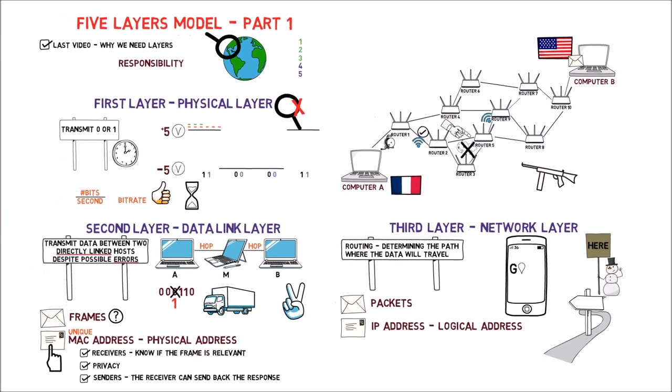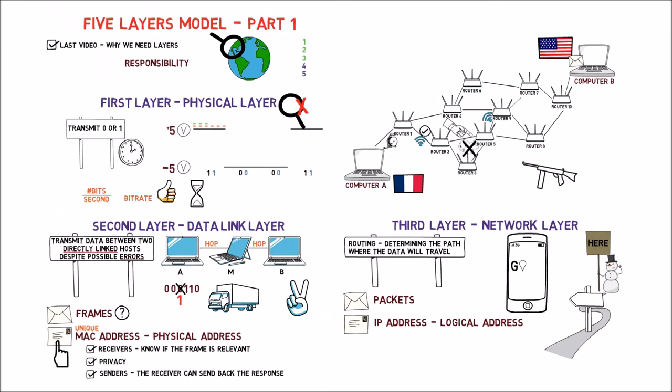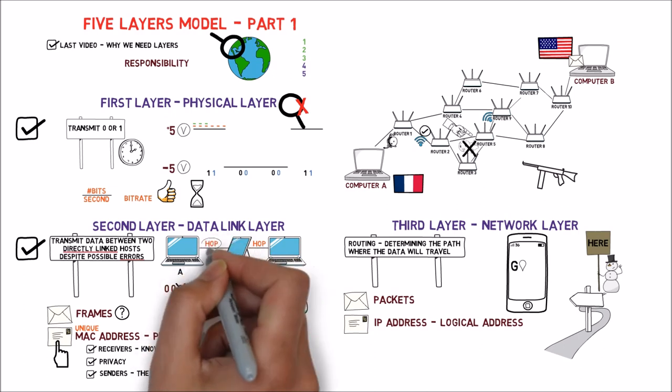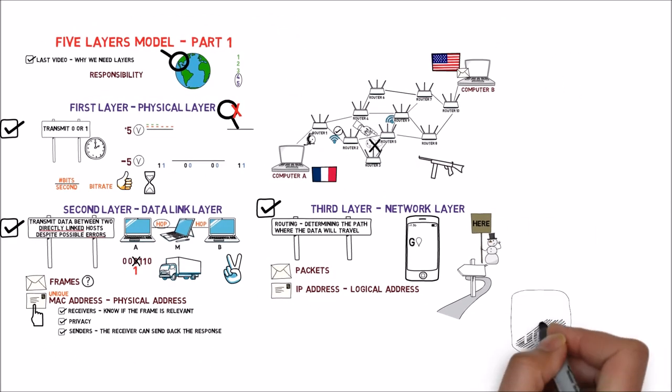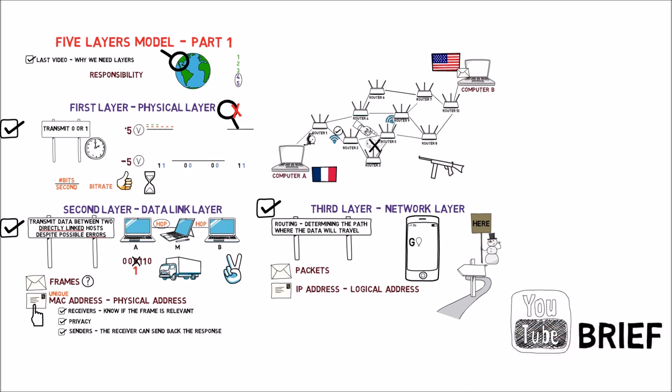Alright, so far we have covered three of the five layers. We said that the physical layer is responsible for transmitting a single bit, one or zero, over the network. Again, we shall not focus on this layer throughout the course. We then briefly talked about the data link layer responsible for transmitting data between directly linked devices, that is, devices connected via a single hop. When we need to get data to transfer between hosts that are connected via multiple hops, the third layer comes into play and determines the route, that is, the path that the packets will travel. In the next video we will cover the remaining two layers and then gain a full image of the five layers model. Again, these videos are only a high level overview of the layers model. We shall take an in-depth view in later videos. If you have any questions, feel free to post them in the comments below or on our Facebook page.